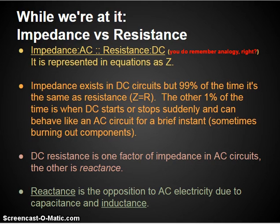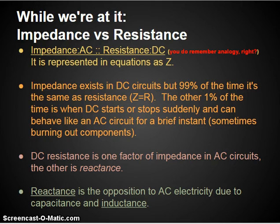There's also opposition of AC electricity due to capacitance of the conductors and also inductance. Inductance is a property of electricity to be induced in a conductor — not through a cell. For example, a generator: when you pass a magnet over a coil of wire repeatedly and at a steady rate, you are generating the flow of electrons. That is known as induction.